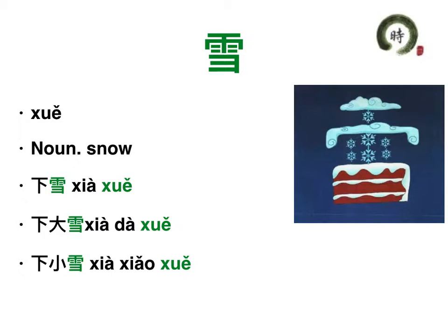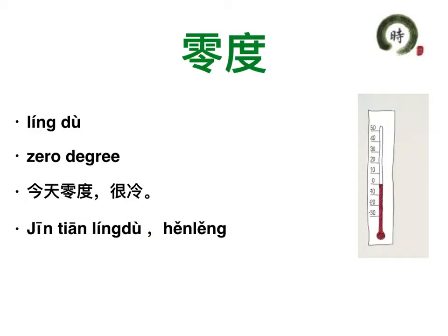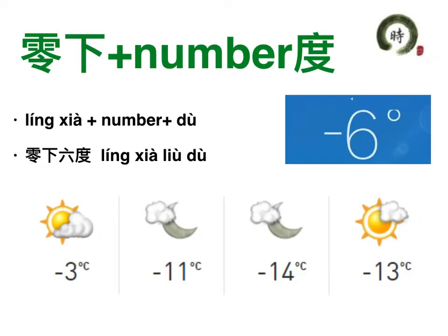下一个词语是零度。Next one: 零度. 零度 means 'zero degree.' 零 is zero, 度 indicates degree. 今天零度很冷 — today is zero degree, it's very cold. We use a number and 度 to indicate the temperature degree. When the temperature is below zero, we use 零下. 零 is zero, 下 is 'under' or 'below.' We use 零下 and a number before 度 to indicate the temperature is under zero.